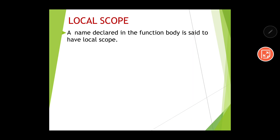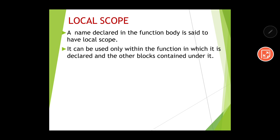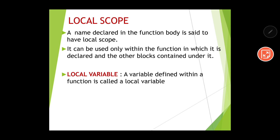Now let us go to local scope. A name declared in the function body is said to have a local scope. Whatever variable names we declare within the function body — not in the main program — have local scope. It can be used only within the function in which it is declared. A variable defined within a function is called a local variable, and local variables have local scope.